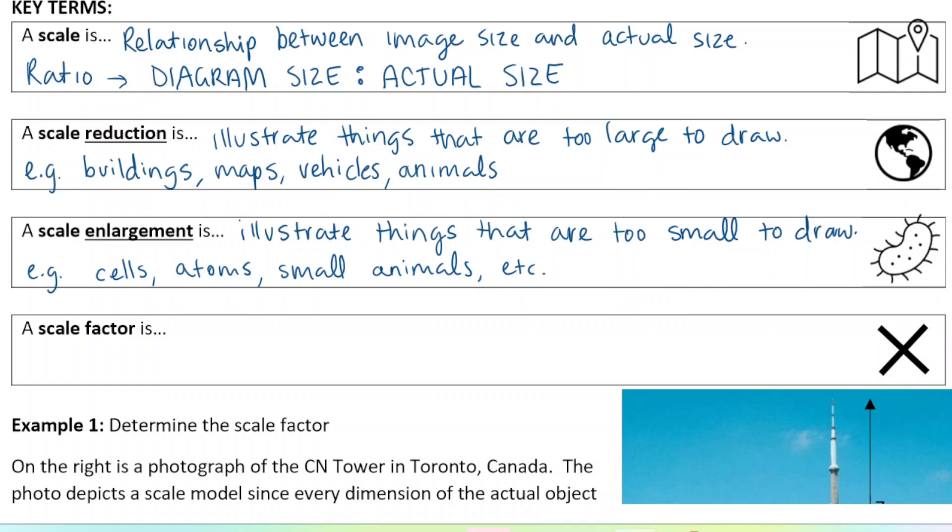A scale factor is the number used as a multiplier when scaling, and we'll practice using those as a multiplier. When the scale factor is larger than one, that means we are going to make the image bigger. It's going to be an enlargement. When we have a scale factor that is less than one, we are making the image smaller. We're going to get a reduction.